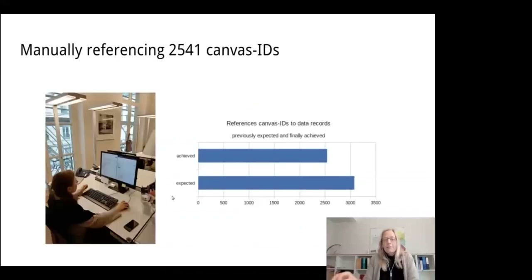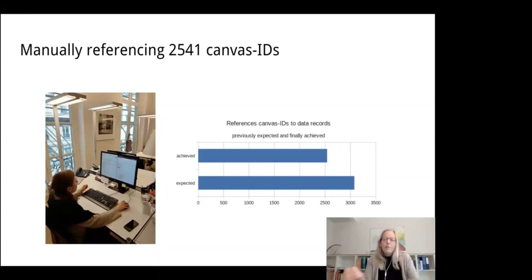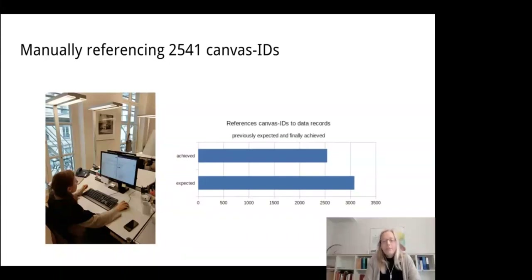We manually traced 2,541 canvas IDs. In the meantime we deployed three instances of different IIIF viewers for prototyping our new website to see how it all works out. It worked fine, but we had to address three major challenges.